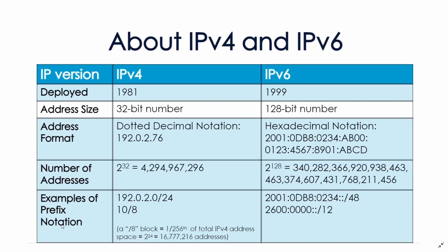IP version 6 is the successor to IP version 4, featuring far larger address space, simpler routing, and simpler address assignment. A lack of IPv4 addresses was the primary factor that led to the creation of IPv6. Though most modern systems now are dual-stacked and use both IPv4 and IPv6 simultaneously. Hosts may also access IPv6 networks via IPv4, which is called tunneling.